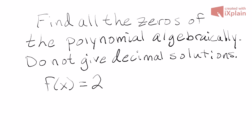The problem we want to look at is to find all of the zeros — both rational and irrational — of a polynomial, and we want to do it algebraically with exact values, not decimal solutions. The polynomial we're going to look at is 2x³ minus 25x² plus 56x minus 15. This polynomial has three zeros: one rational and two irrational.